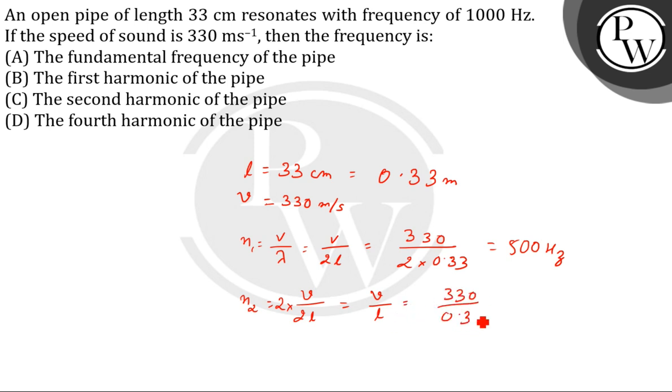This gives us 1000 Hertz, and the question states that the frequency is 1000 Hertz. So this will be the second harmonic of the pipe. The correct answer is the second harmonic of the pipe.